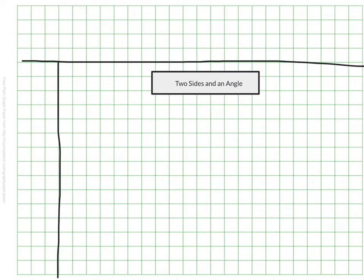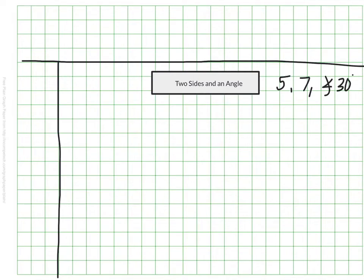Sometimes when constructing triangles, you don't know all three sides, but instead there's a constraint about your angles in addition to a couple of the sides. Maybe you know what two sides need to be and you also know the angle that something needs to fit into. So let's try this with a side of 5, a side of 7, and an angle of 30 degrees. The question is: can you make just one triangle, or are there a couple of options?